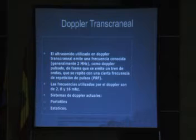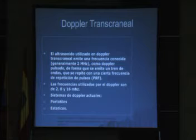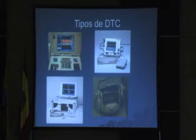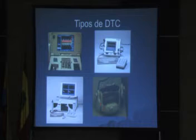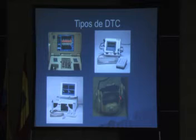Por lo general se utilizan ondas de 2, 8 y 16 MHz, dependiendo de lo que se quiera utilizar. Hay sistemas estáticos y portátiles; básicamente son los mismos, unos son mejores que otros a la hora de utilizarlos. Aquí hay una gráfica con los diferentes sistemas disponibles. Este es un sistema nuevo llamado multigón, un sistema de detección automática del Doppler, ya que a veces es muy complicado detectar el flujo sanguíneo. Esto automatiza todo el proceso.